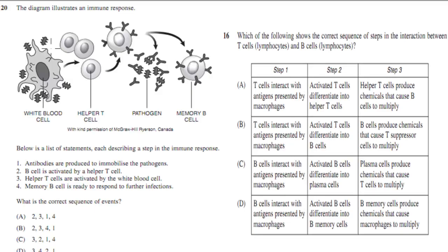The first two questions. A diagram illustrates the immune response with white blood cells, helper T cells, pathogens, and memory cells. Below is a list of statements describing steps in the immune response: one, antibodies are produced to neutralize the pathogens; two, a B cell is activated by a helper T cell; three, helper T cells are activated by white blood cells; four, memory B cells are ready to respond to further infections. What is the correct sequence of events?